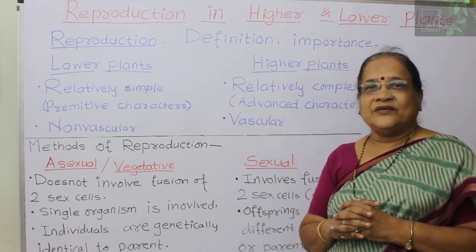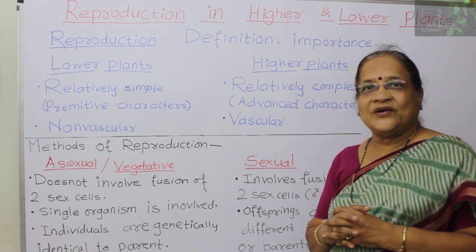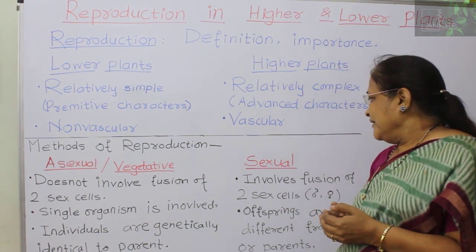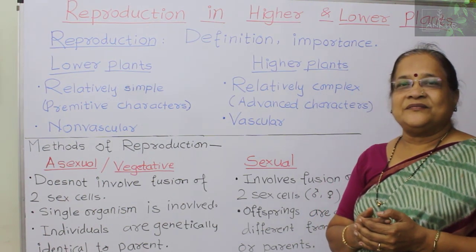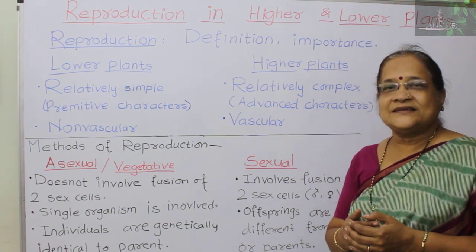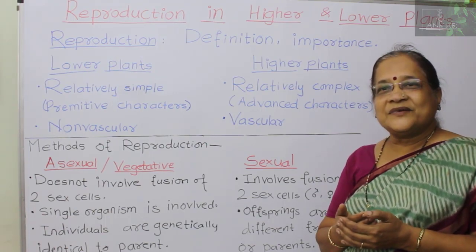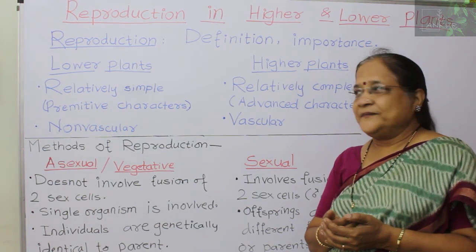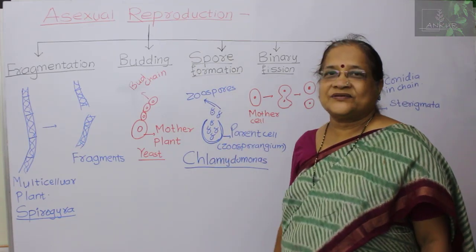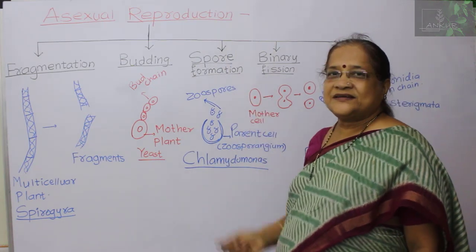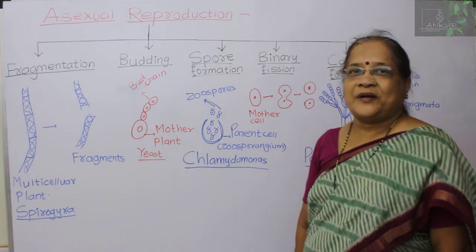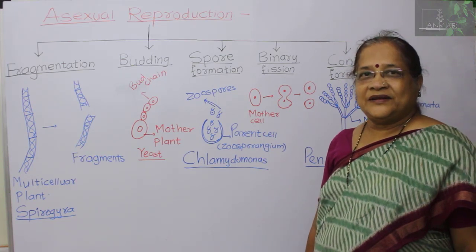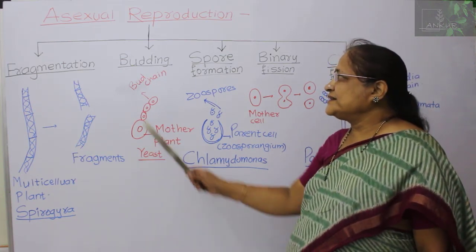In sexual reproduction, the word itself shows that sex cells are involved — male and female. After the union of male and female sex cells, we get offspring that show similarity or some differences, or a combination of characters. There are various types of sexual reproductive methods found generally in the lower group of plants, and some plants may have one or more than one method.